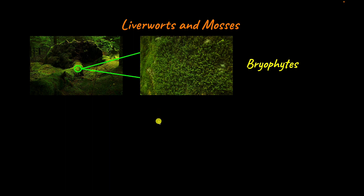Since bryophytes are non-vascular plants, they don't have proper differentiated vascular tissues. Instead, their bodies are made up of undifferentiated multicellular structures called thallus — the singular is thallus and the plural is thalli. These structures have the reproductive structures of bryophytes as well.